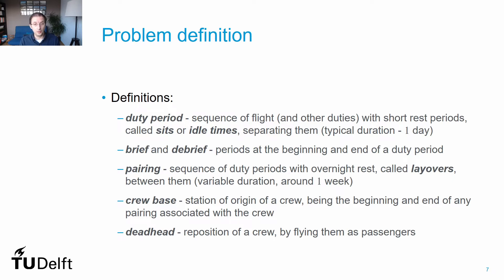The sequence of duty periods over a set of days is called a pairing. These also include the overnight resting periods, called layovers, and a sequence of days off that may be given to the crew after completing the set of activities related to the duties in the pairing. Each crew member is associated with a crew base — the airport from which the crew starts operations at the beginning of the day and ends operations at the end of the pairing.